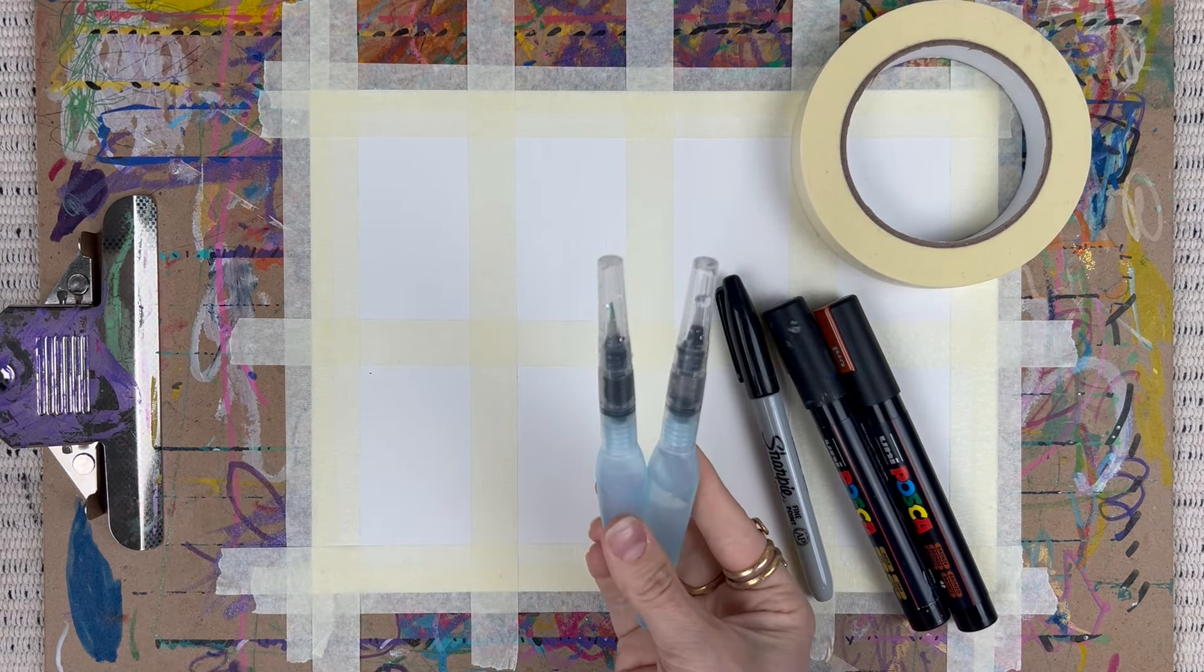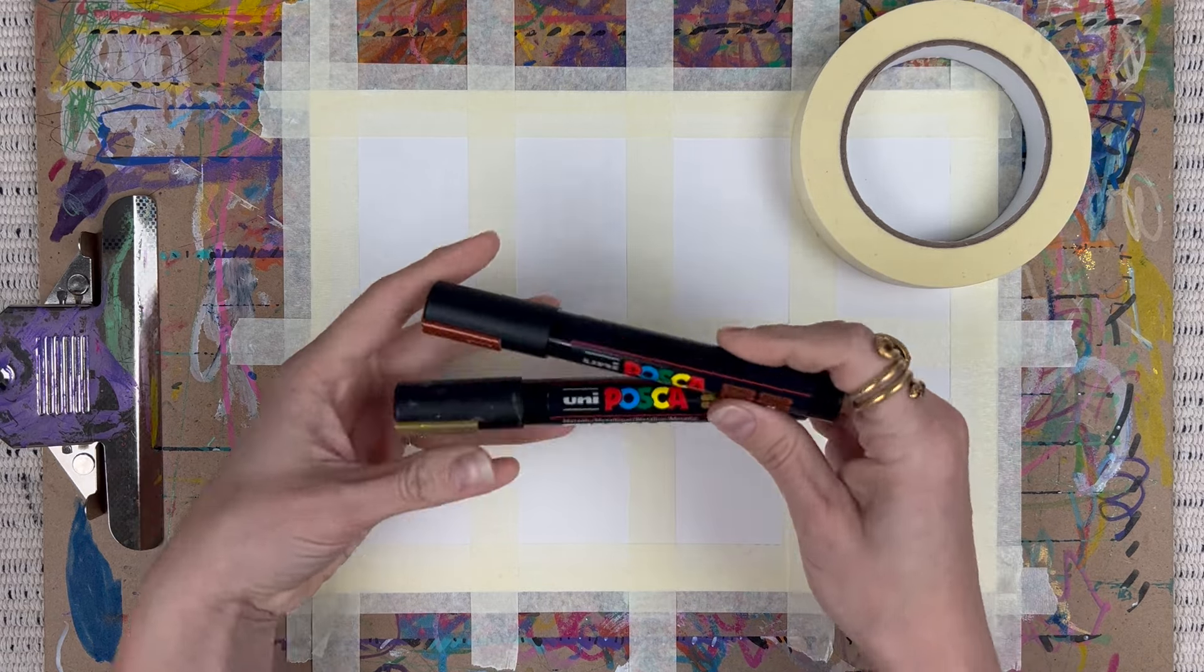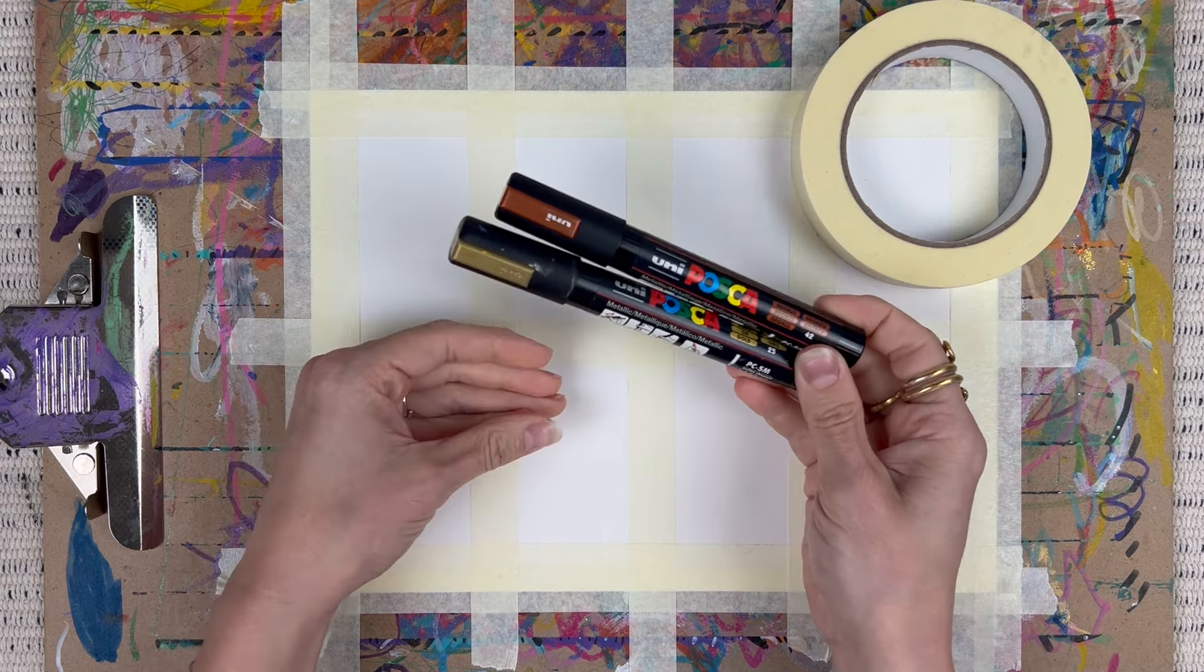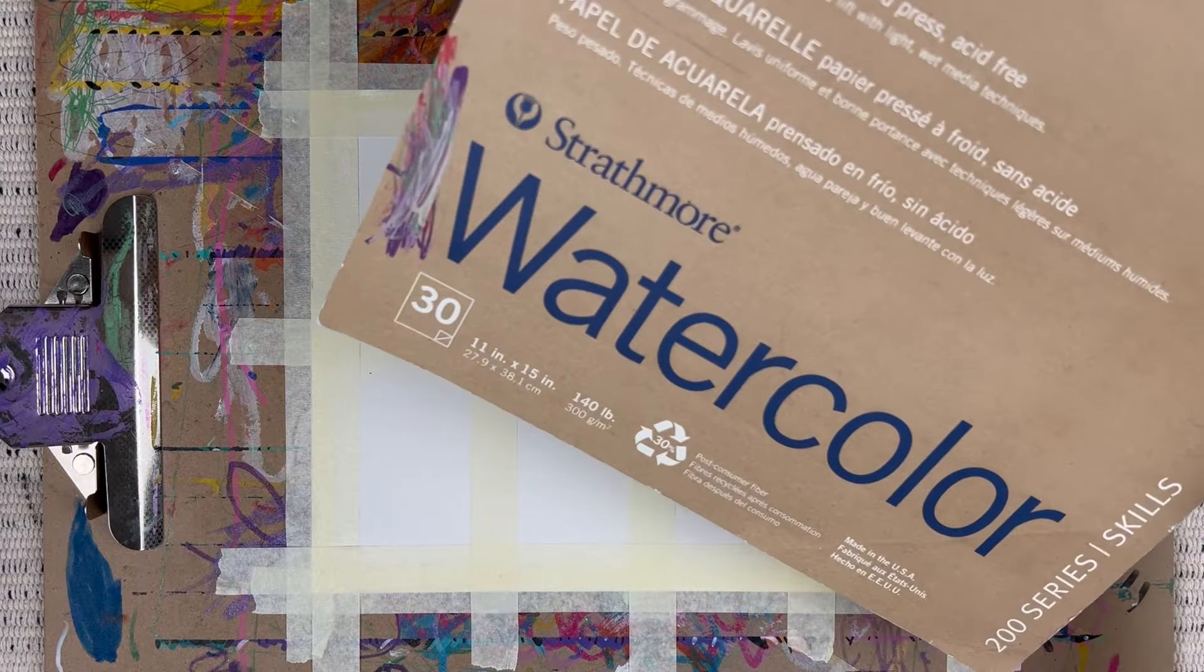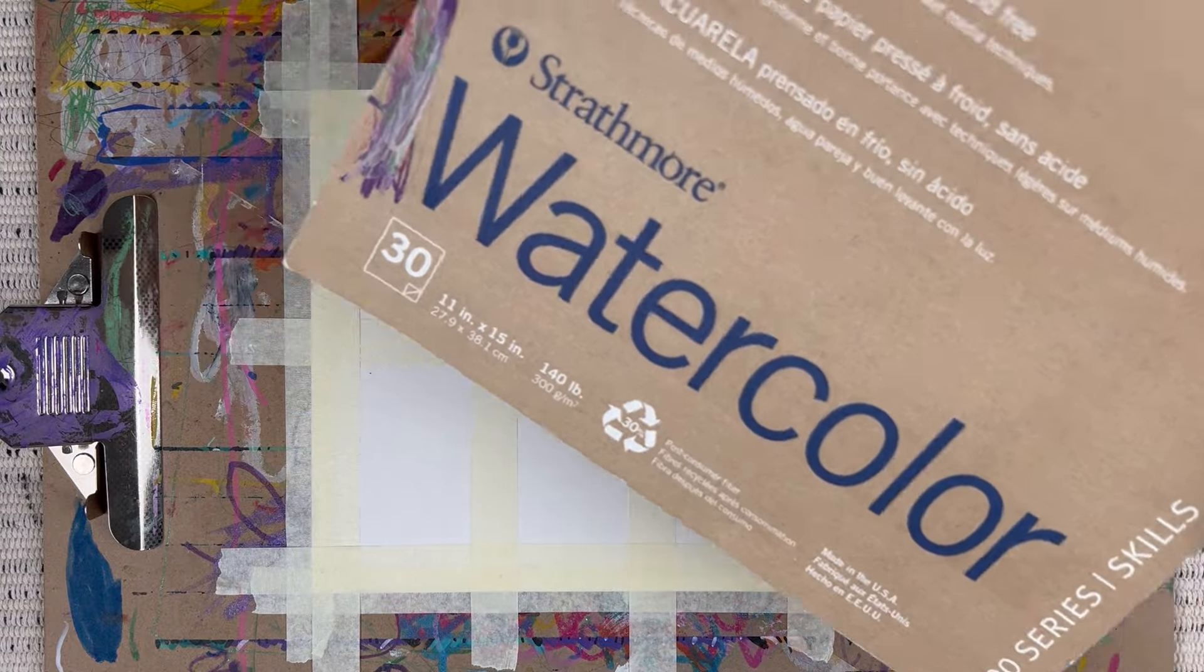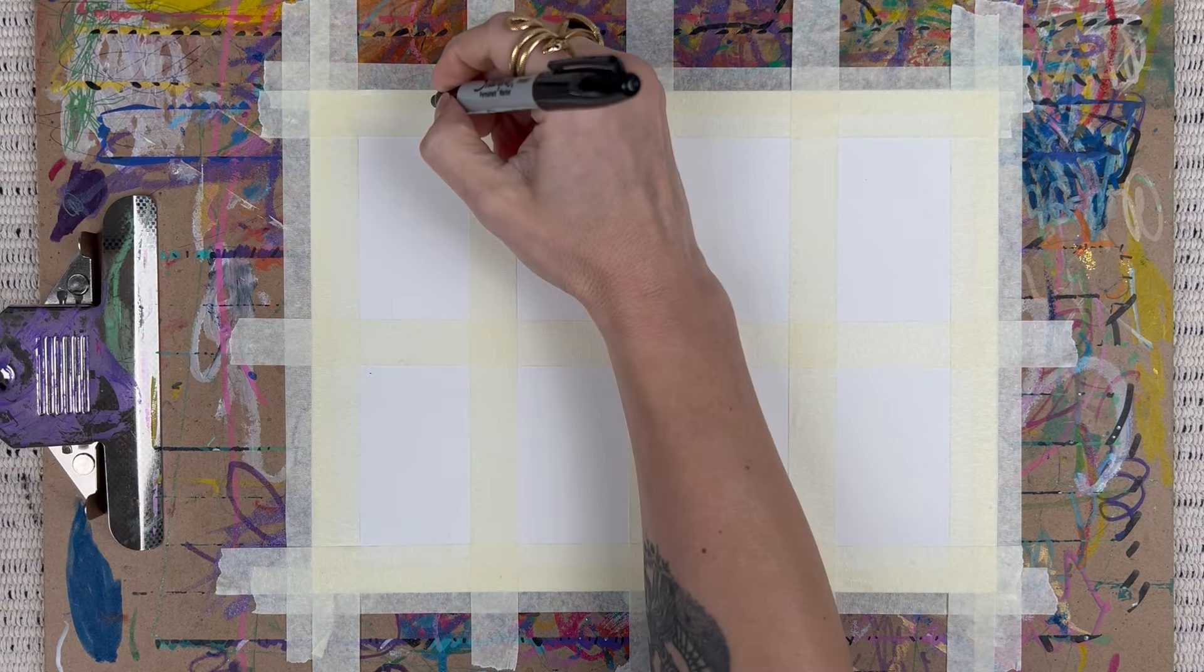I also have my water brush pens filled with water. I've got my Sharpie permanent marker, and I've got two Posca paint pens, one in gold, one in bronze, so we're going with metallics today. I've got my artist tape and watercolor paper, which I cut down a large sheet to the size you see here.